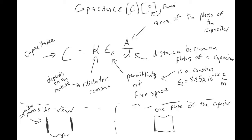As you add different materials into the space between your plates, you just need to multiply an extra factor in to change the capacitance. The minimum you can have is for a vacuum, and that would be a dielectric constant of one. As you add different materials, you'll get some dielectric constant that's greater than one.